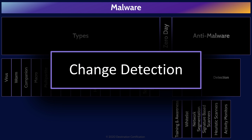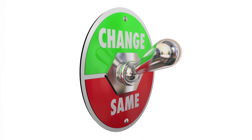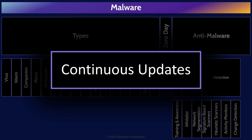Change detection monitors key system files for changes, since a lot of malware will make changes to certain system files like configuration files. We hash the files we want to monitor, then rehash them periodically to see if the hash values differ — if they do, it means a change has been made and we might have malware on our system. Finally, since most anti-malware solutions are signature-based, it is critically important that we constantly and continuously update our scanners with the latest signatures so we can detect the latest malware.